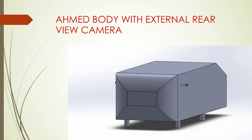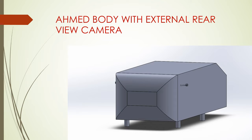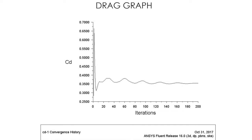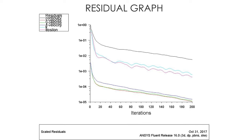This is our Ahmed body with camera, which we designed ourselves. This is a close look — we used a circular curved-shaped camera. You can see the design is proportional to the dimensions of the Ahmed body. This is the coefficient of drag, which comes to around 0.35 to 0.4, and the coefficient of lift comes between 0.3 to 0.5, with 200 iterations. This is the residual graph.